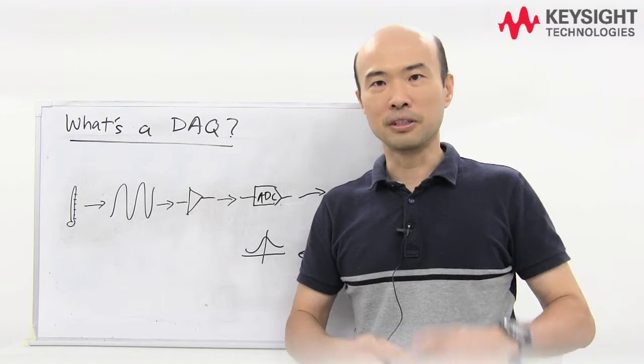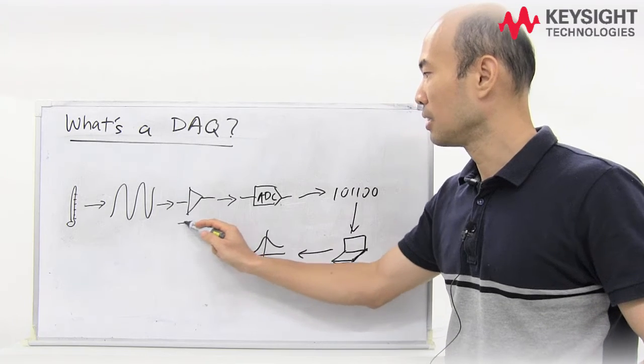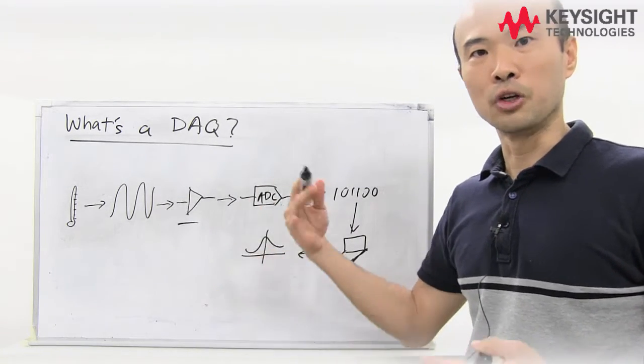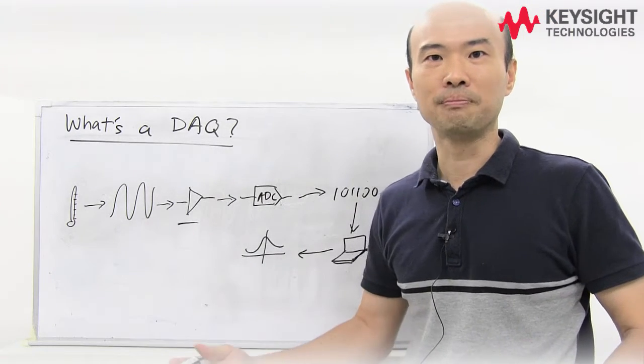So the first thing is the DAQ offers flexibility because of the built-in signal conditioning. You can use whatever sensor that you like for your job. You don't have to worry about the complexity of the circuit and the setup.